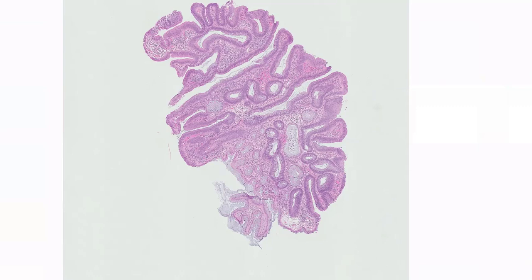When I look at tubular adenomas, I often look at them on low power, and what I'm looking for is very blue-looking epithelium on the top. I'm also looking for these contrasts — something I'm going to talk about over and over again — looking for a crypt that looks atypical, right adjacent to which there is a crypt that looks not atypical at all, looks like a normal colonic crypt.